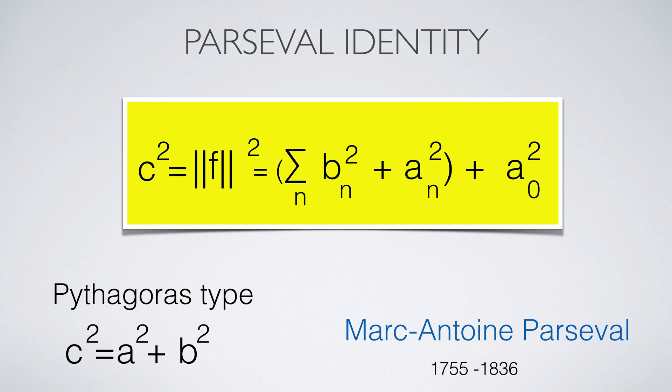A generalization of Pythagoras tells us that the square of the length of the function is the sum of the squares of the Fourier coefficients. Unfortunately, little is known about Marc Antoine Parseval who first found this cool formula.